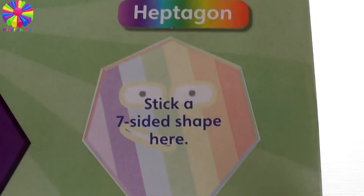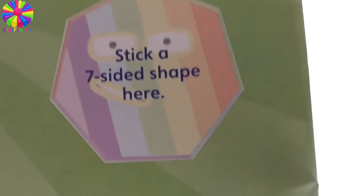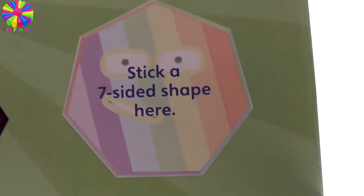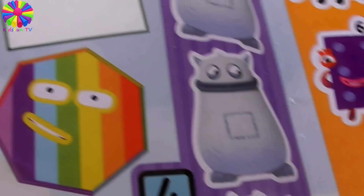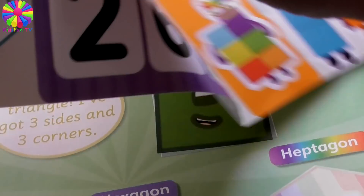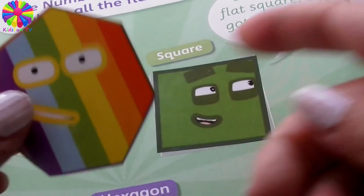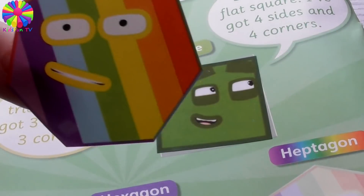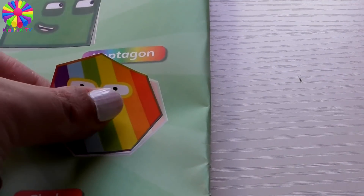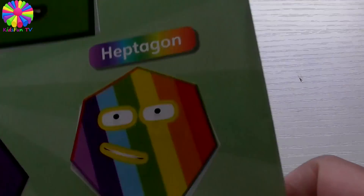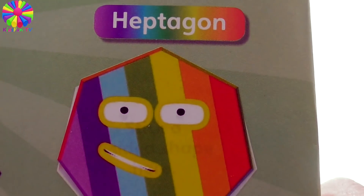Next one is a seven-sided shape. As you can see, it has rainbow colors — so do you know which number it is? It's number seven! Numberblock Seven is now a heptagon. It sounds like hexagon, but it's a heptagon.